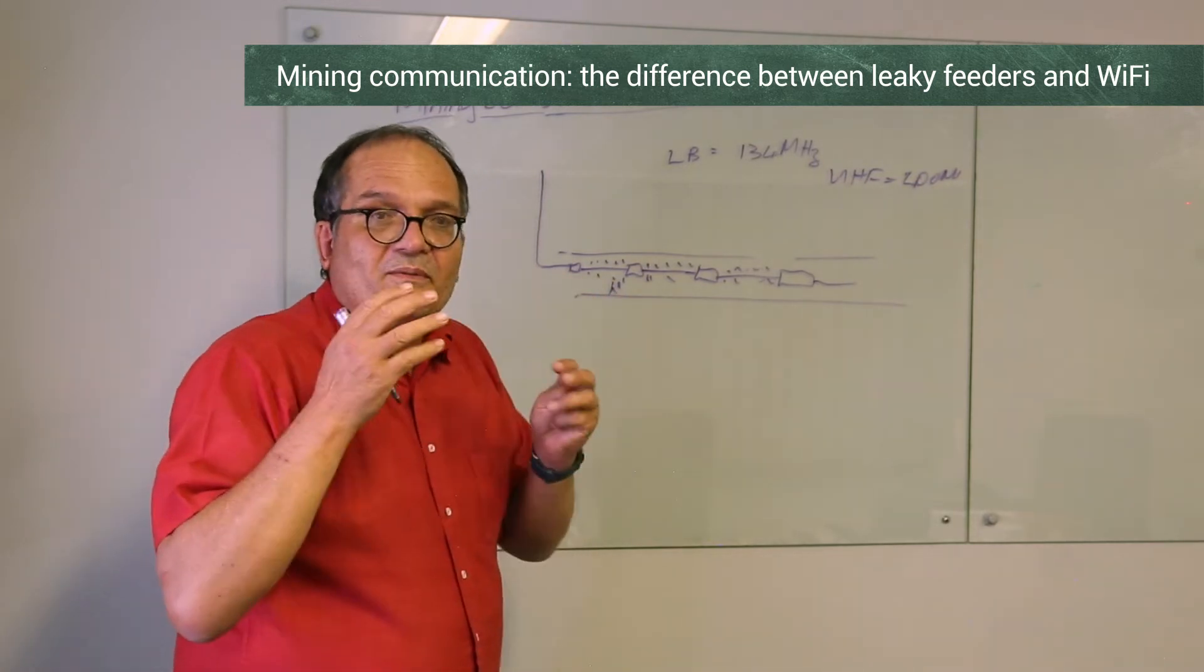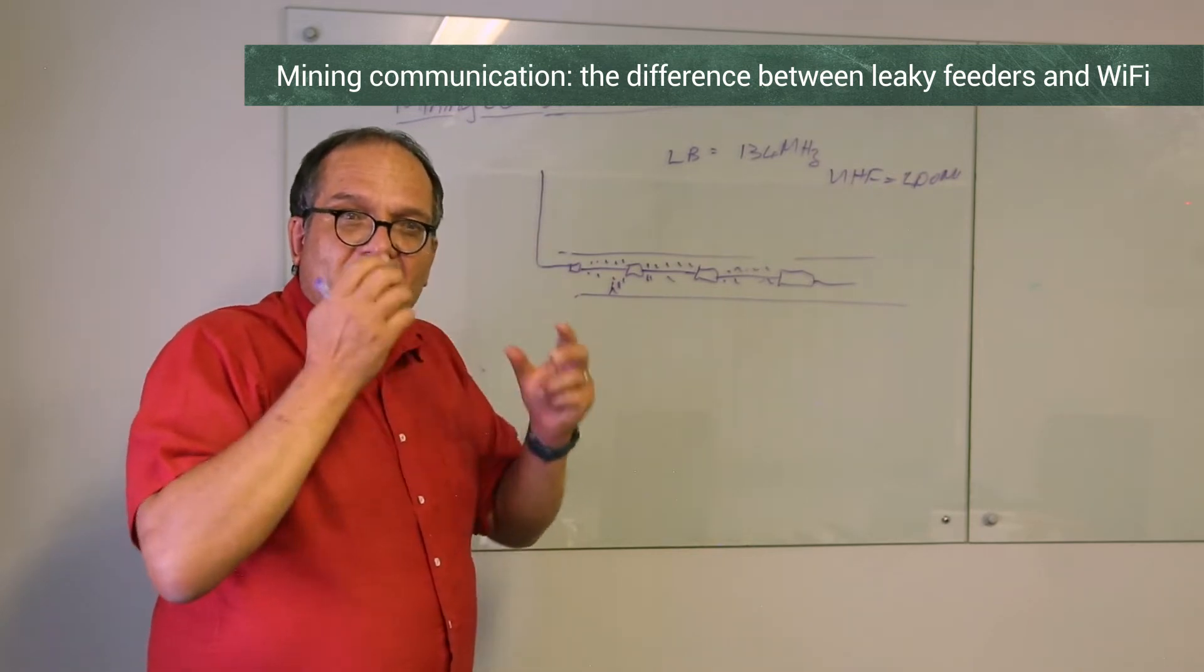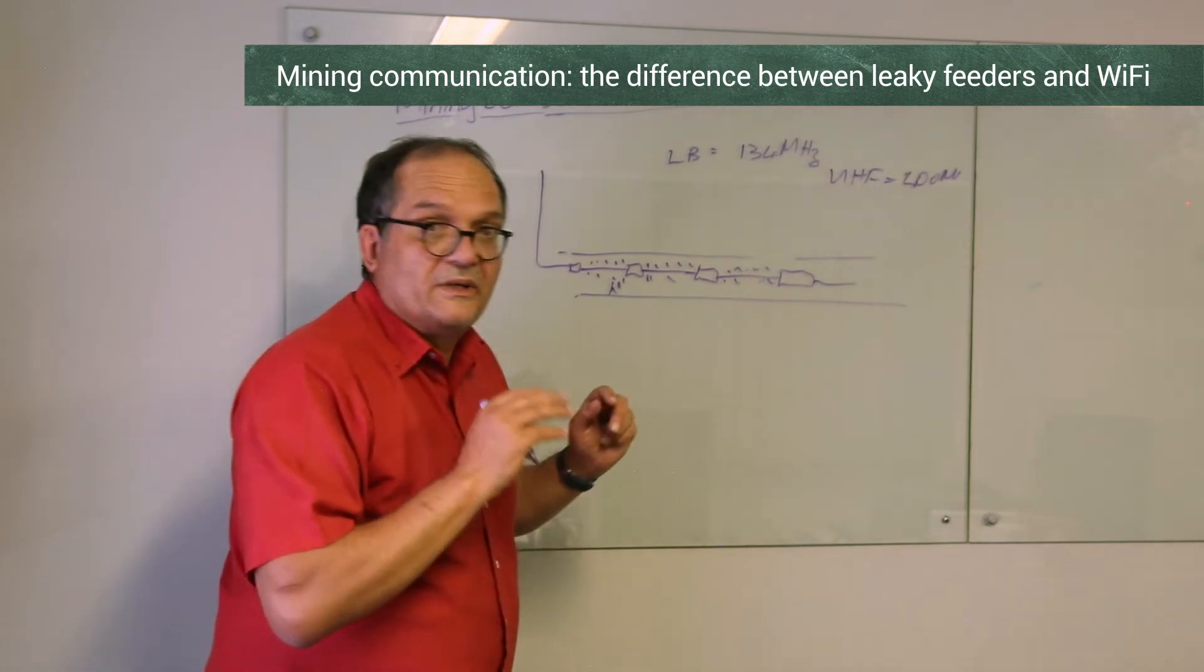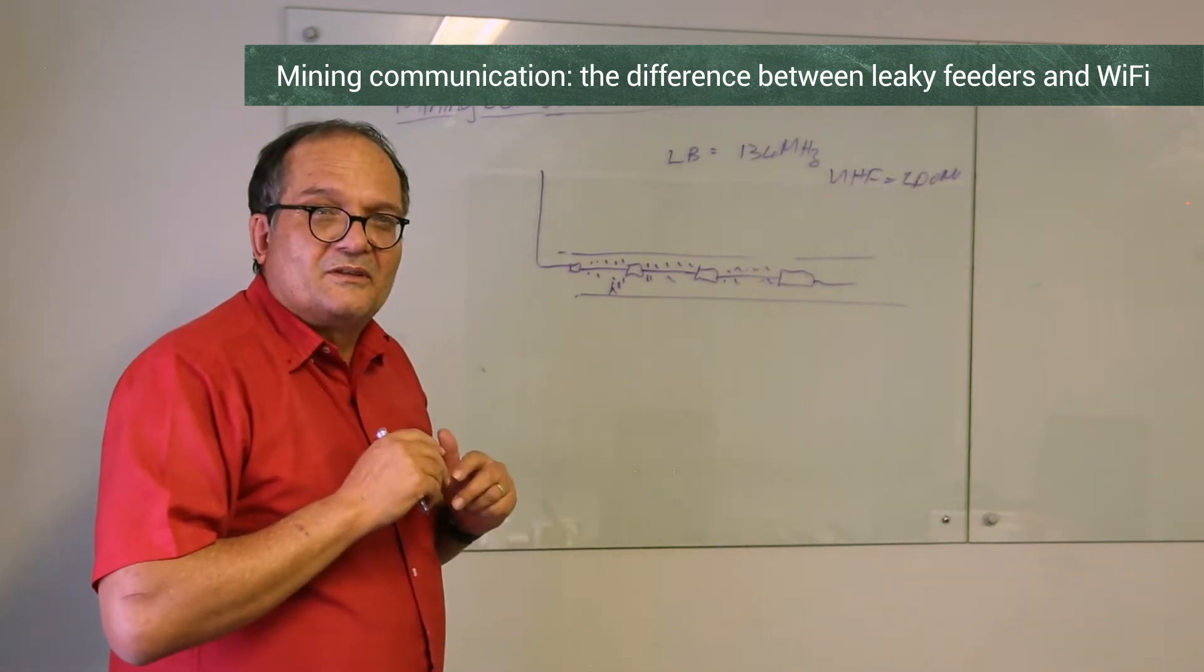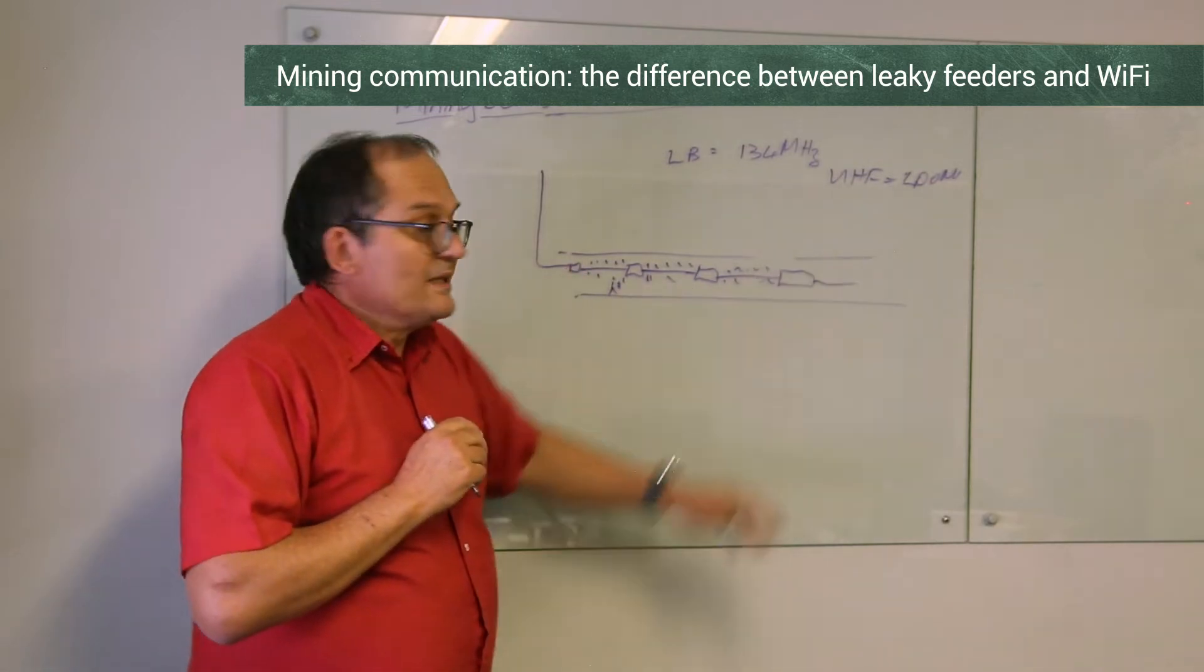The biggest problem: it was essentially 8 kilohertz bandwidth, which means voice only. You can make it a bit wider and then do like 8 kilobit data or something like that, but not useful for data nowadays.